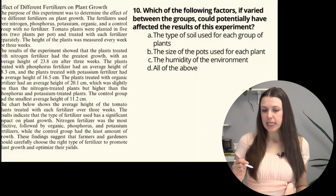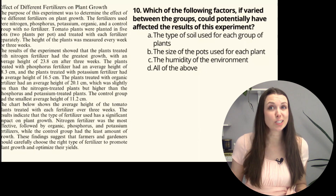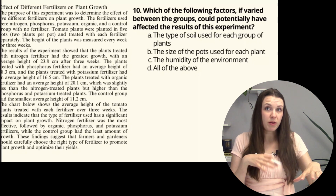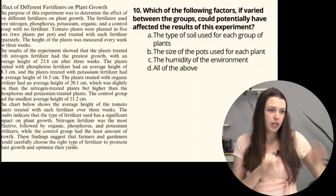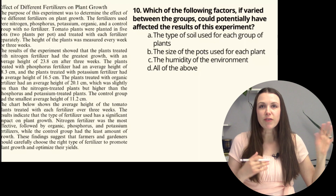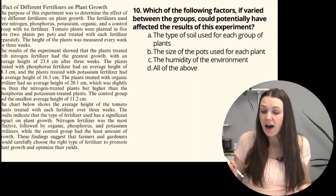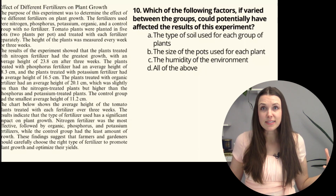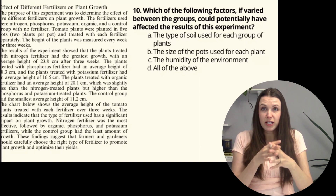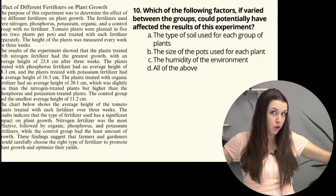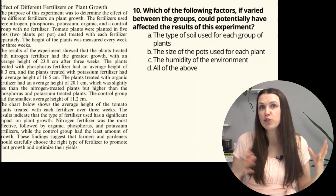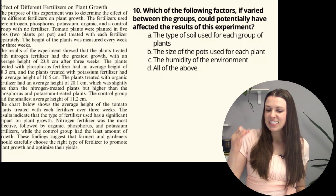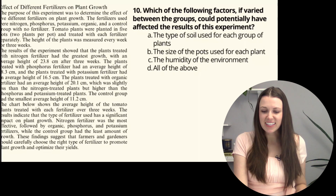Question 10: Which factors, if varied between groups, could potentially have affected the results? The type of soil used — if one pot had premium Miracle-Gro soil and another had plain dirt, that could vary results. The size of pots — a tiny pot restricts root growth, while a large pot lets roots spread out. The humidity of the environment — some plants do well in humidity and some don't. Changing any of these things could have definitely affected the results, so the answer is D: all of the above.